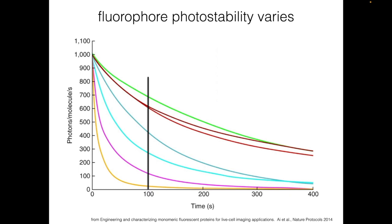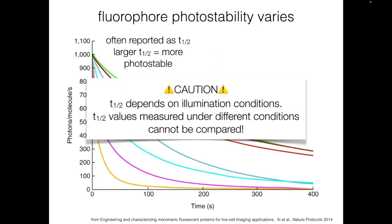This type of photobleaching curve is often summarized with a T½ measurement. T½ is the time at which the fluorophore intensity is one half of the initial intensity. The larger the T½, the more photostable the fluorophore is. However, we have to be very cautious about how we interpret these measurements, because photobleaching rate — and therefore T½ — depends on illumination conditions.